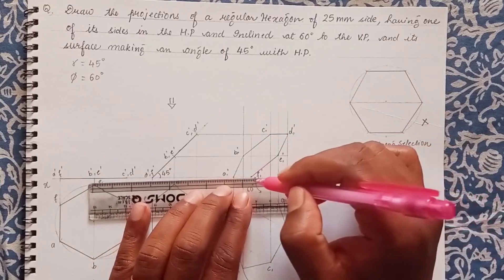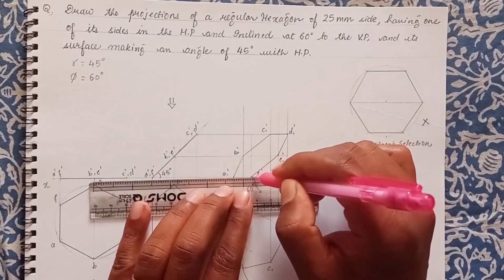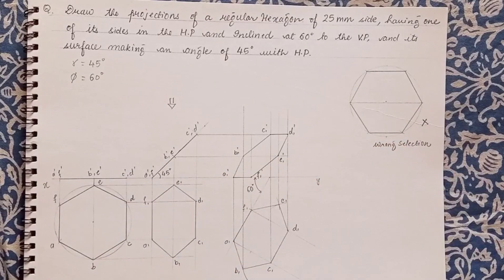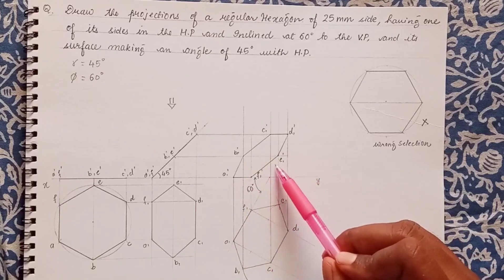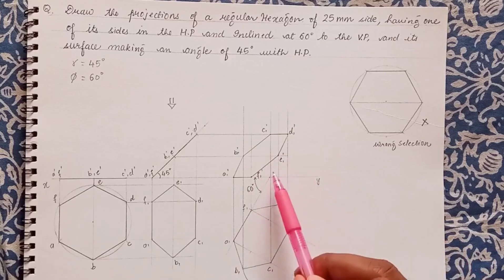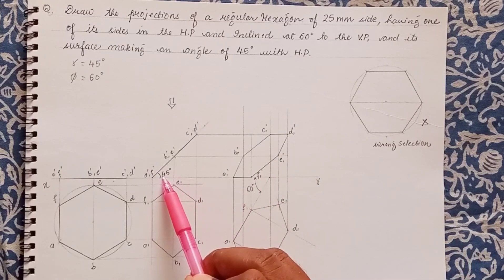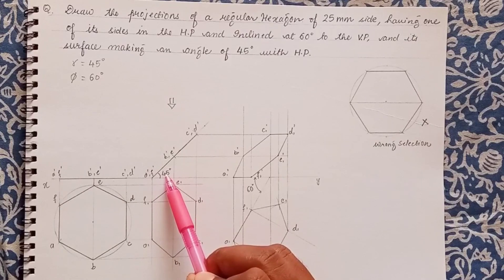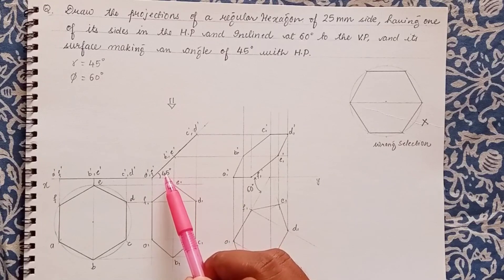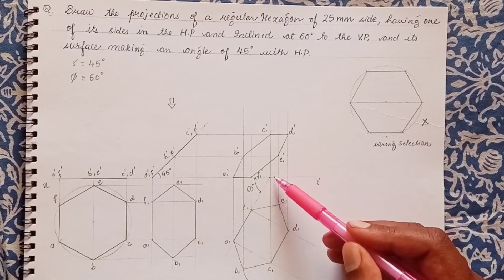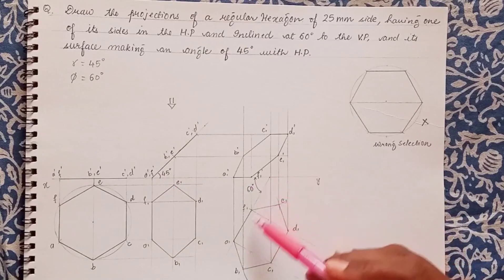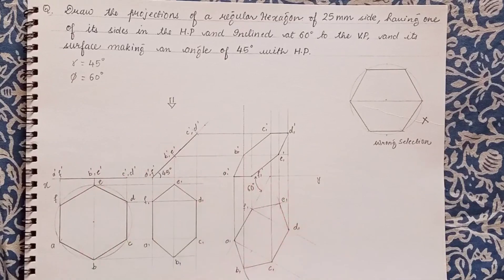Connecting all the points gives the final projection. The solution satisfies all given conditions: side AF is in HP, the surface inclination is 45 degrees with HP or XY, and the side which is in HP makes an angle of 60 degrees with VP. When all these conditions are set, this is the final projection.